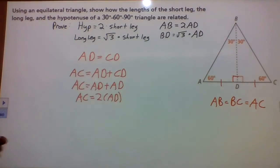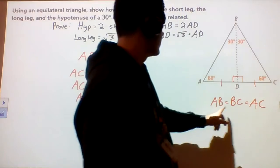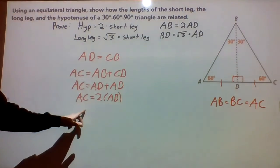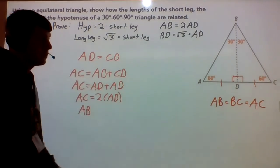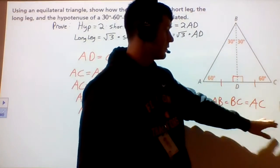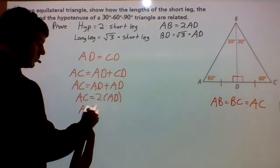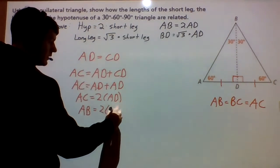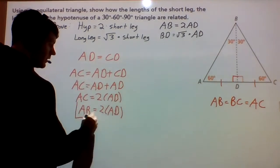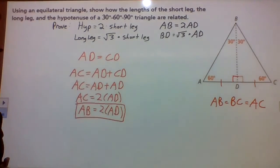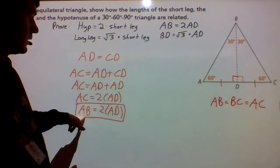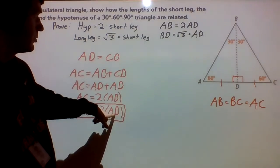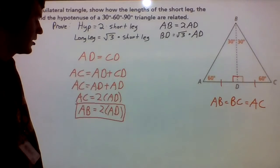We know since this is equilateral, AC is equal to AB. So we can substitute in AB for AC. AB equals 2 times AD — and that's our first proof. That shows that the hypotenuse AB is equal to two times the short leg, which is AD.